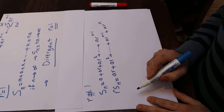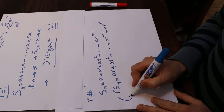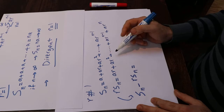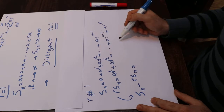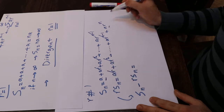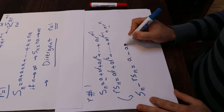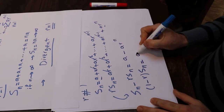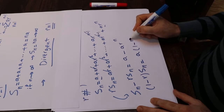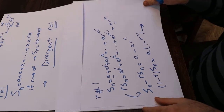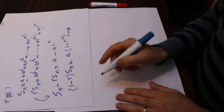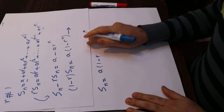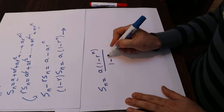If you subtract these two equations, you get SN minus RSN. All middle terms cancel out, leaving only A and AR^N, so that equals A minus AR^N. In other words, (1 minus R) times SN equals A times (1 minus R^N), and from here you can conclude that SN equals A times (1 minus R^N) divided by (1 minus R).